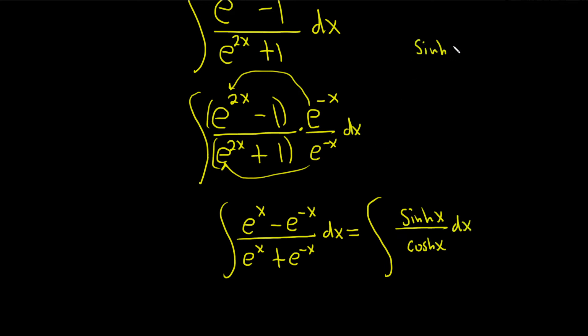sinh x is equal to e to the x minus e to the negative x over 2. Cosh of x is equal to e to the x plus e to the negative x over 2. So when you divide these, what's going to happen is you're going to get this. So e to the x minus e to the negative x over 2 divided by this. But when you divide, you multiply by the reciprocal.